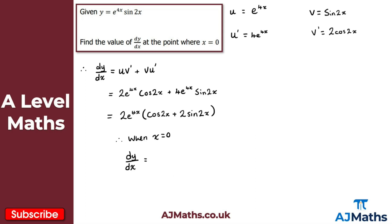Substituting x equals zero: 2e to the power of zero, multiplied by cosine of (2 times zero) — which is cos 0 — plus 2 sin(2 times zero) — which is 2 sin 0.